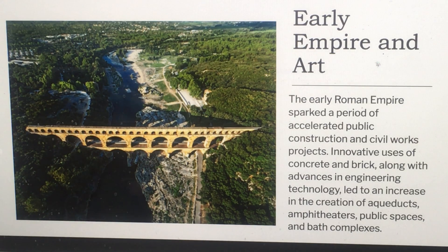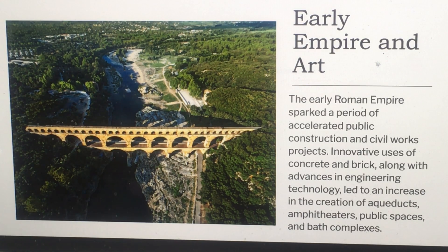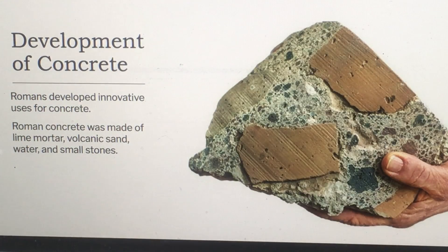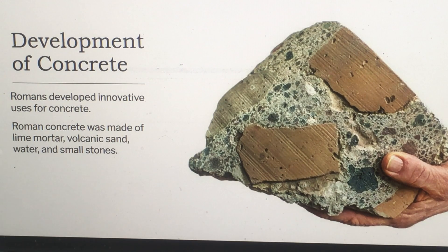Romans had baths and brought water into the city through amazing feats of architecture with aqueducts — many of which are still standing and still work, which is remarkable. The Romans invented concrete, developing innovative uses for it. It was made of lime mortar, volcanic sand, water, and small stones.